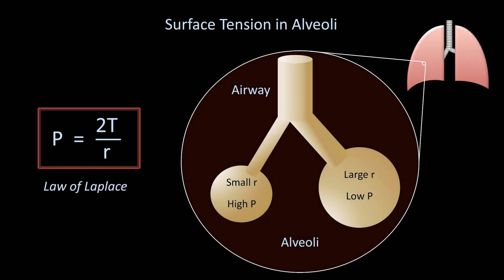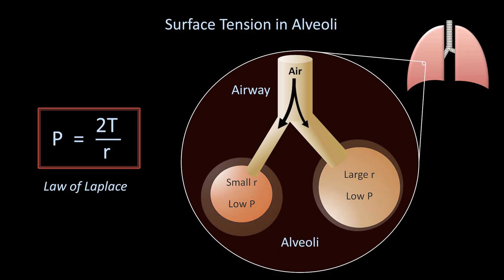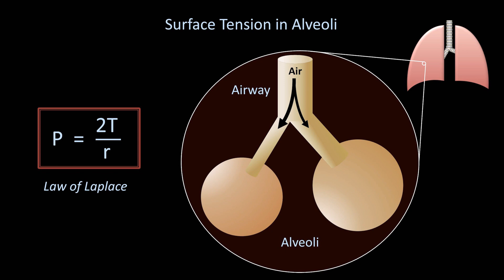Here are our two alveoli again, but the smaller one no longer has a relatively high internal pressure compared to the larger one. Instead, surfactant lowers the surface tension in the large alveolus by a modest amount, while it lowers the surface tension in the small alveolus by quite a bit. The fact that the surface tension in the small alveolus is particularly low offsets the effect of the smaller radius. As a consequence, the resulting internal pressure is low within both alveoli, so when air comes into the airways, both alveoli are inflated, improving gas exchange.